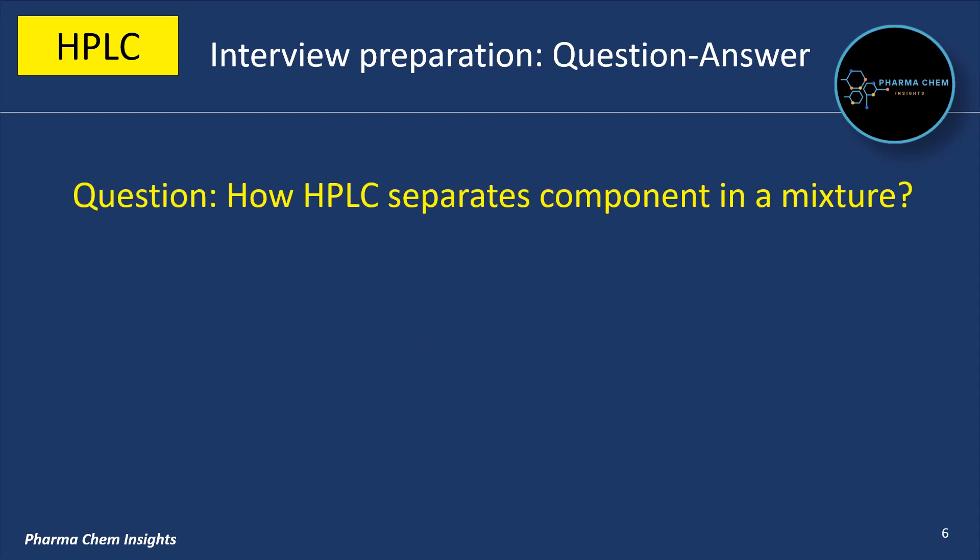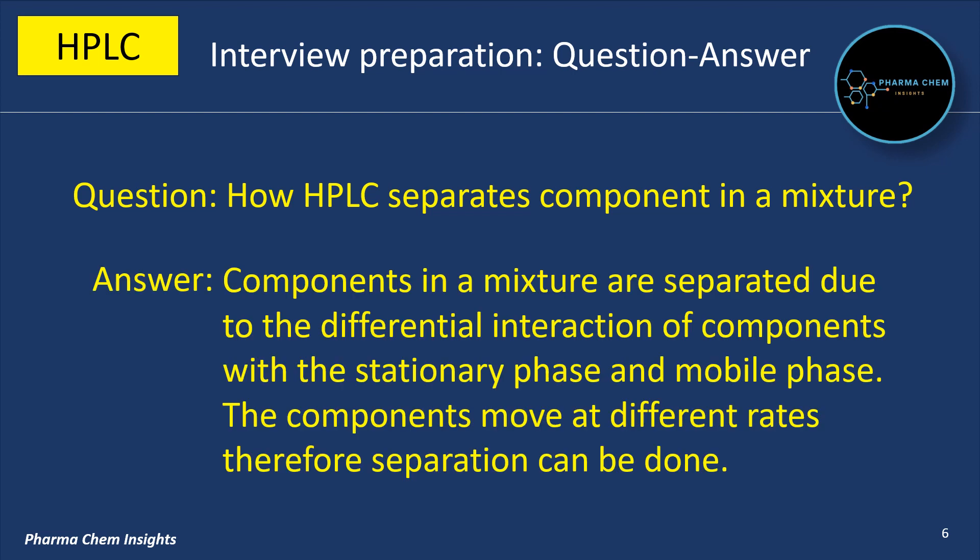How does HPLC separate components in a mixture? Components in a mixture are separated due to the differential interaction of components with the stationary phase and mobile phase. The components move at different rates in the column, therefore separation can be done. Greater the interaction, your peak will elute late; weaker the interaction, your peak will elute early.